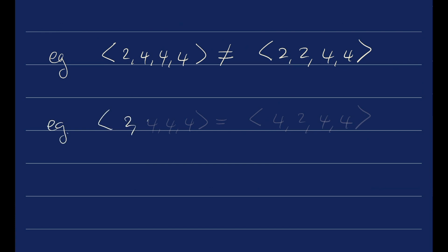Another example: 2, 4, 4, 4 is equal to 4, 2, 4, 4. Same elements, same multiplicity. Order doesn't matter.